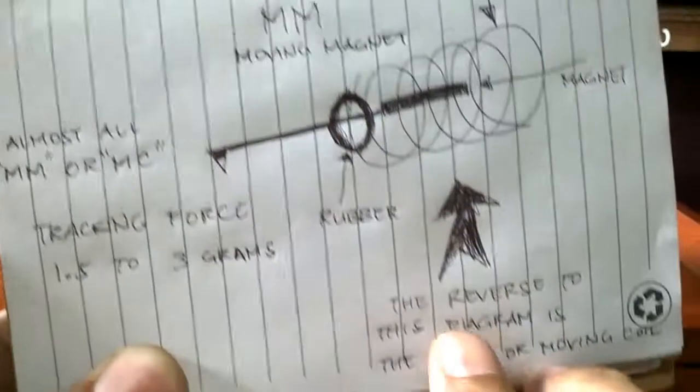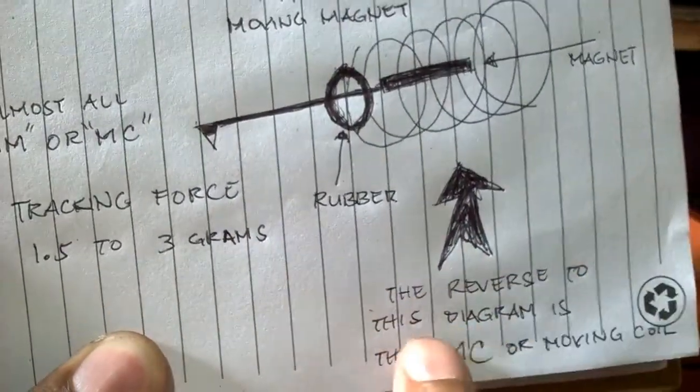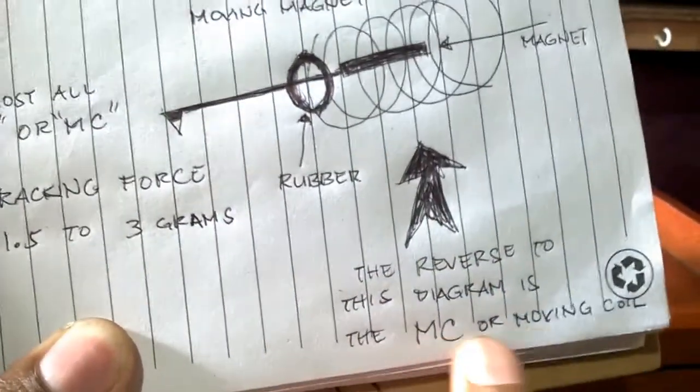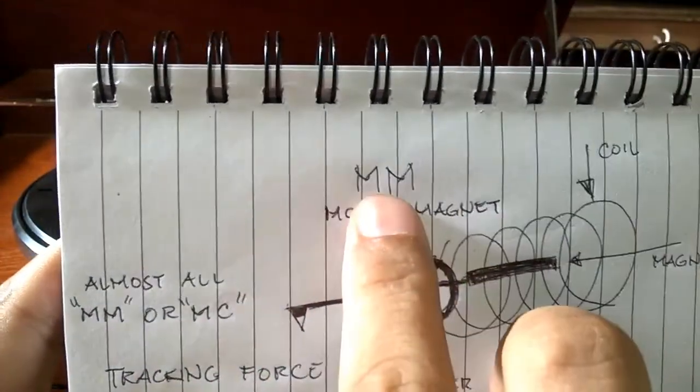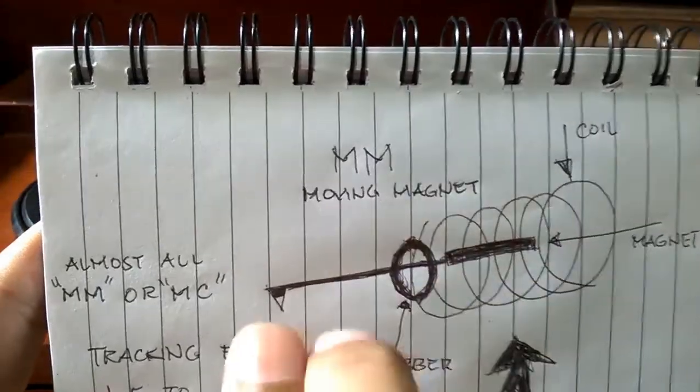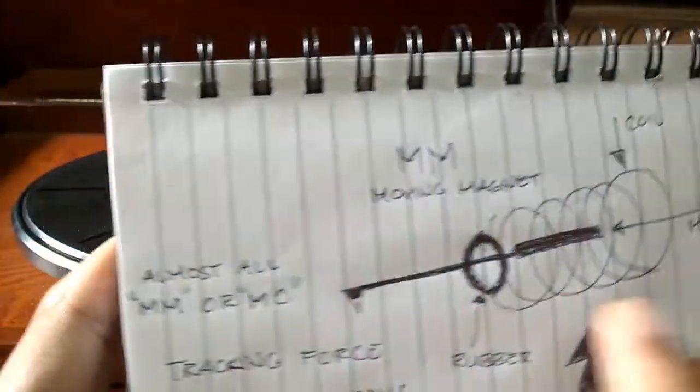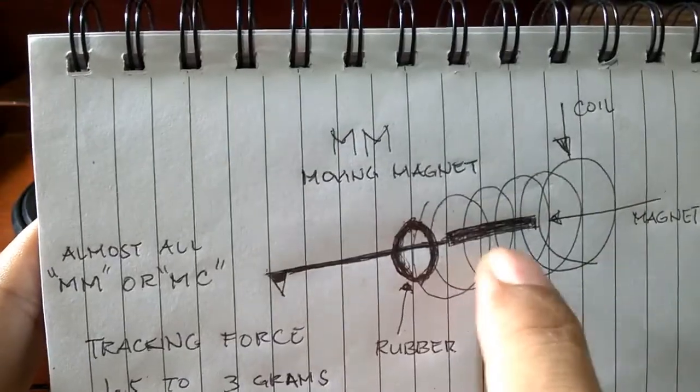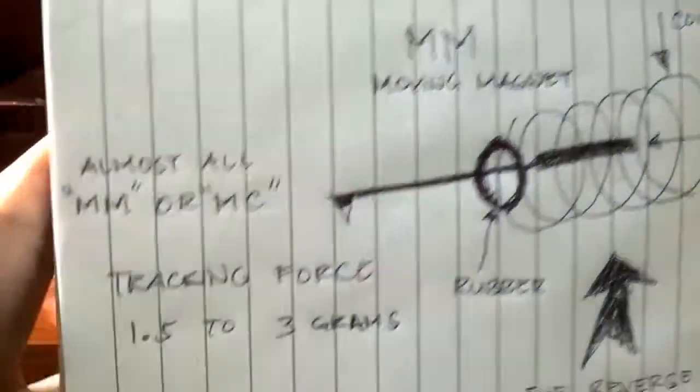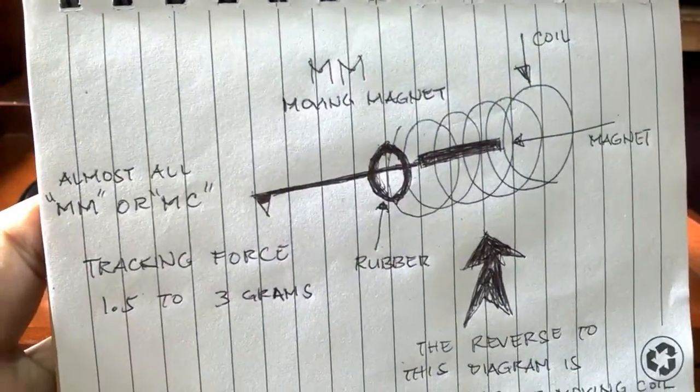So the main reason we have a counterweight just to align the magnet inside the cartridge and this is vice versa for the MC. The reverse to this diagram is the MC or moving coil. My drawing here is for the moving magnet, at the same time for the moving coil, so they are all the same.